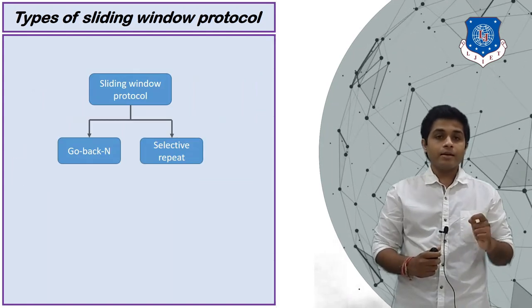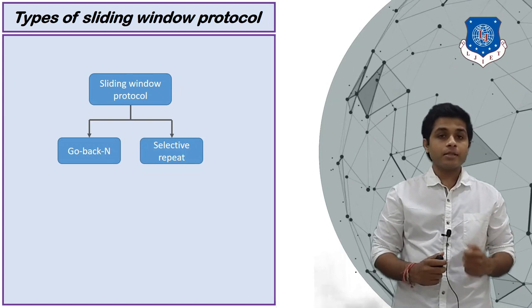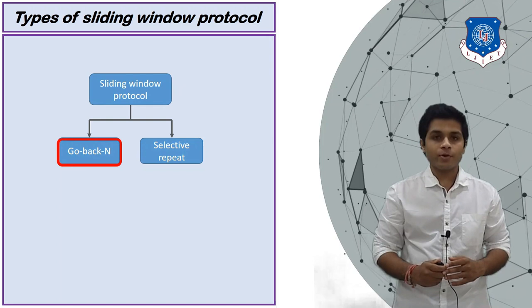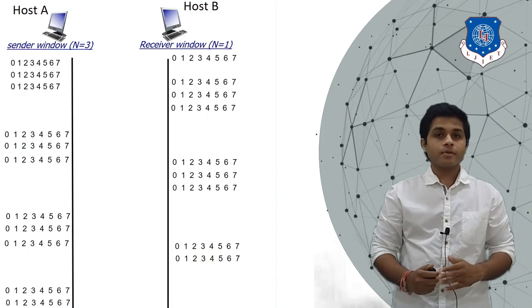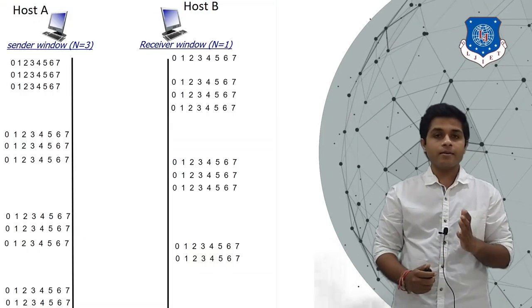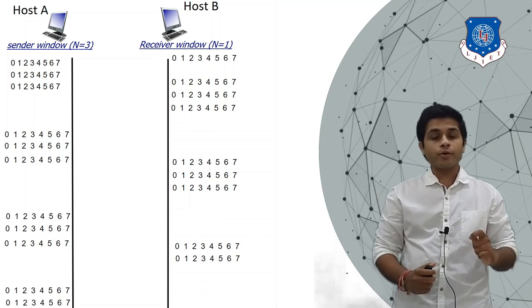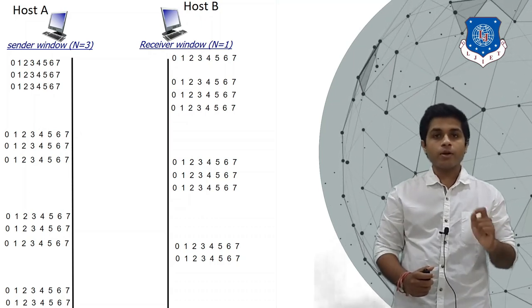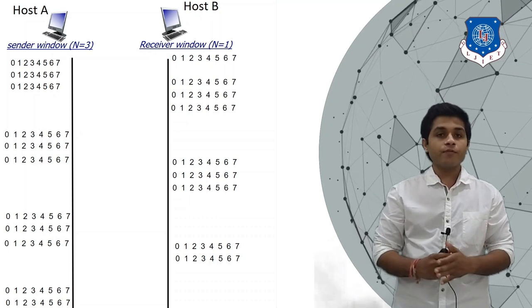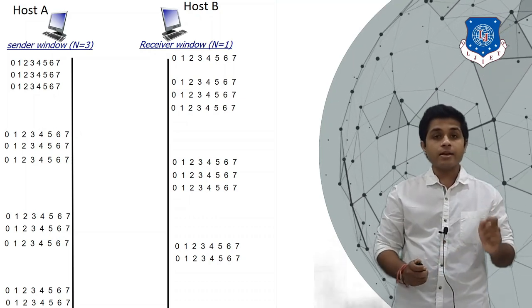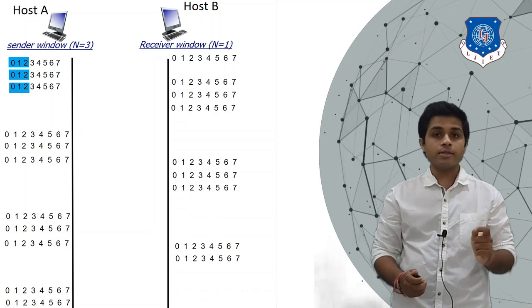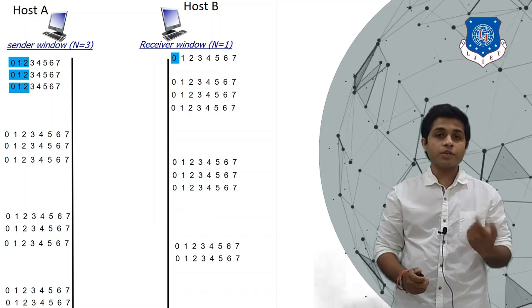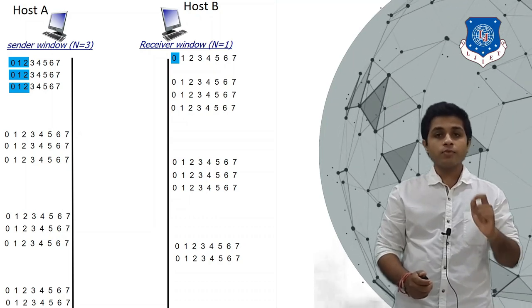The sliding window protocol is divided into two types: Go-Back-N and Selective Repeat. We are going to discuss the Go-Back-N protocol. There are two devices, A and B. In Go-Back-N, N is the size of the sender's window and the receiver's window will always be one. This example is Go-Back-3, meaning the sender's window size is three.